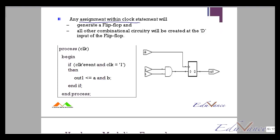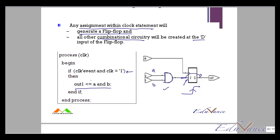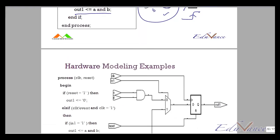An assignment within a clock statement always generates a flip-flop, and all combinational circuitry is created at the D-input of the flip-flop. For example, if I write: if CLK'event and CLK = '1' then out1 <= A and B — this makes an AND gate at the input of the D flip-flop with inputs A and B, and the output Q appears at the clock edge.